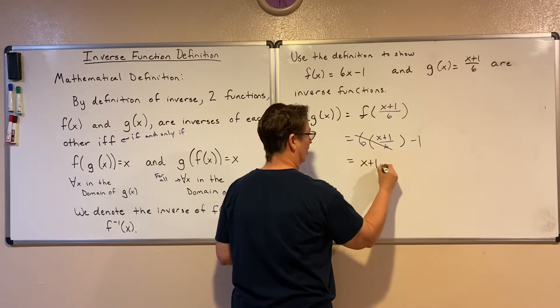Then I'm going to input this into my f function. So everywhere I see an x in this function, I'm just going to replace it with (x+1)/6. Now those sixes become one, and it just leaves me with x+1-1, and +1-1 just leaves me with x.